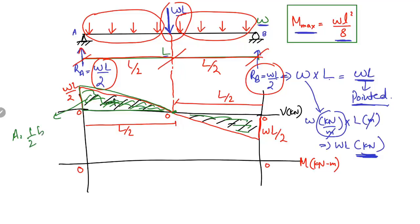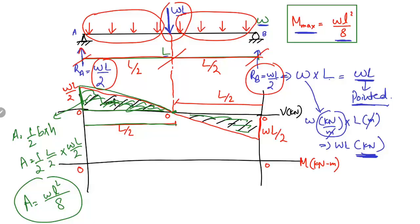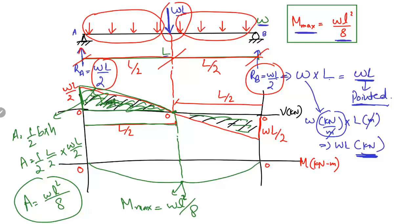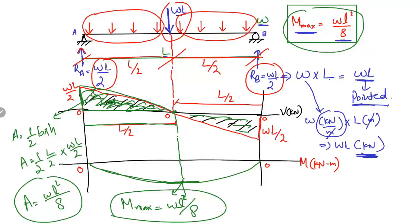The area of the triangle equals ½ × base × height. The base is L/2 and the height is WL/2, so the area = ½ × (L/2) × (WL/2) = WL²/8. The same result comes from the negative triangle on the right side. Therefore, the maximum bending moment is WL²/8, acting at the midpoint of the beam. This confirms the well-known formula we set out to prove.